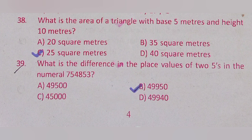Question 38: What is the area of a triangle with base 5 meters and height 10 meters? Option A: 20 square meters, Option B: 35 square meters, Option C: 25 square meters, Option D: 40 square meters. The correct answer is Option C: 25 square meters.